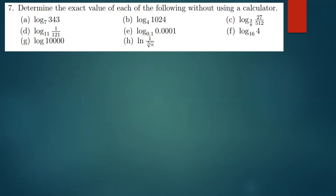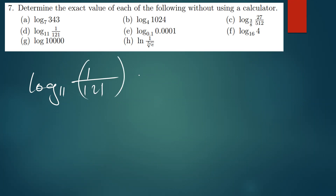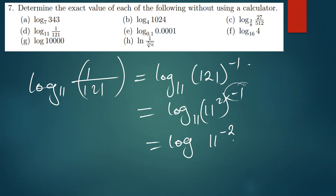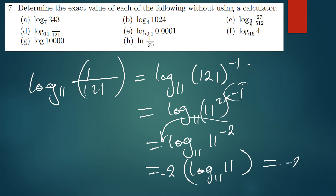Skipping ahead to a fraction example: log of 1/121, base 11. We write this as log of 121 to the power negative 1, base 11. Since 11×11=121, that's 11² to the power −1, which is 11 to the power −2, base 11. The −2 drops down: −2 · log(11) base 11. Since log(11) base 11 = 1, the answer is −2.